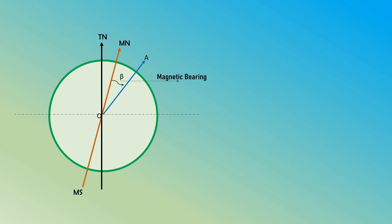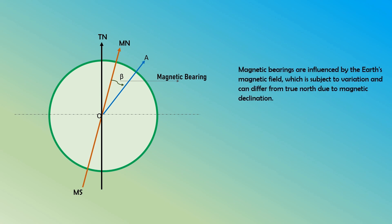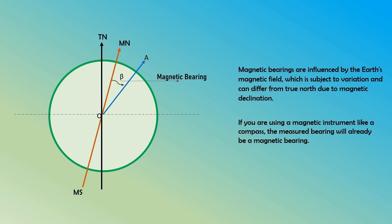Magnetic bearings are commonly used in surveying, navigation, and mapping, particularly when magnetic instruments such as a compass are employed. In addition to magnetic bearing, there is one more important term that needs to be studied, that is declination. As shown in the figure, the magnetic north is always in a different alignment compared to the true north — the magnetic meridian makes an angle with the true meridian, and this difference in angle is what we call declination.